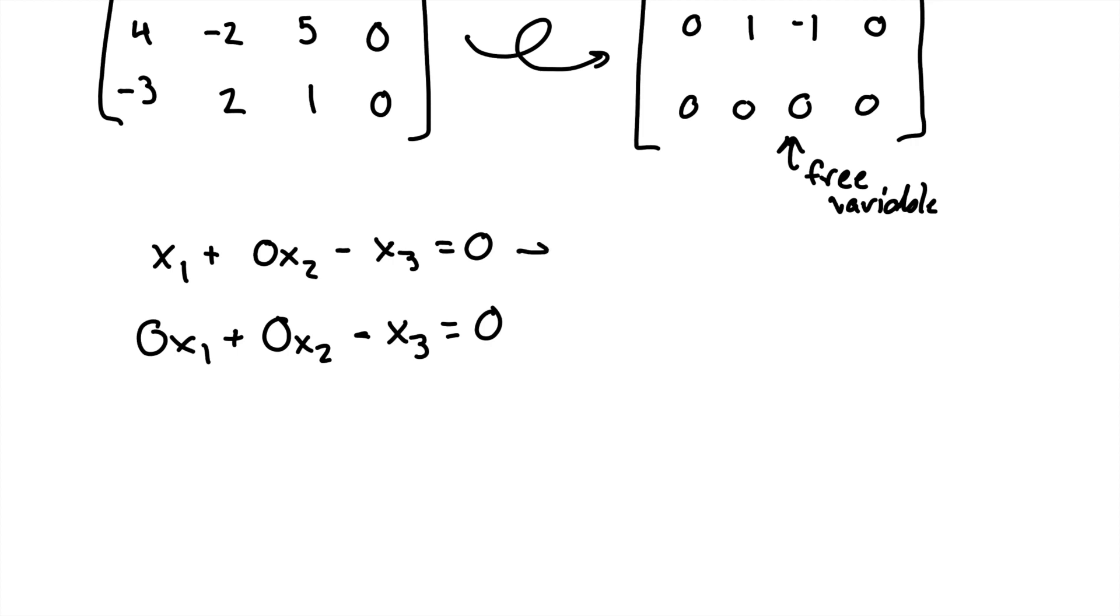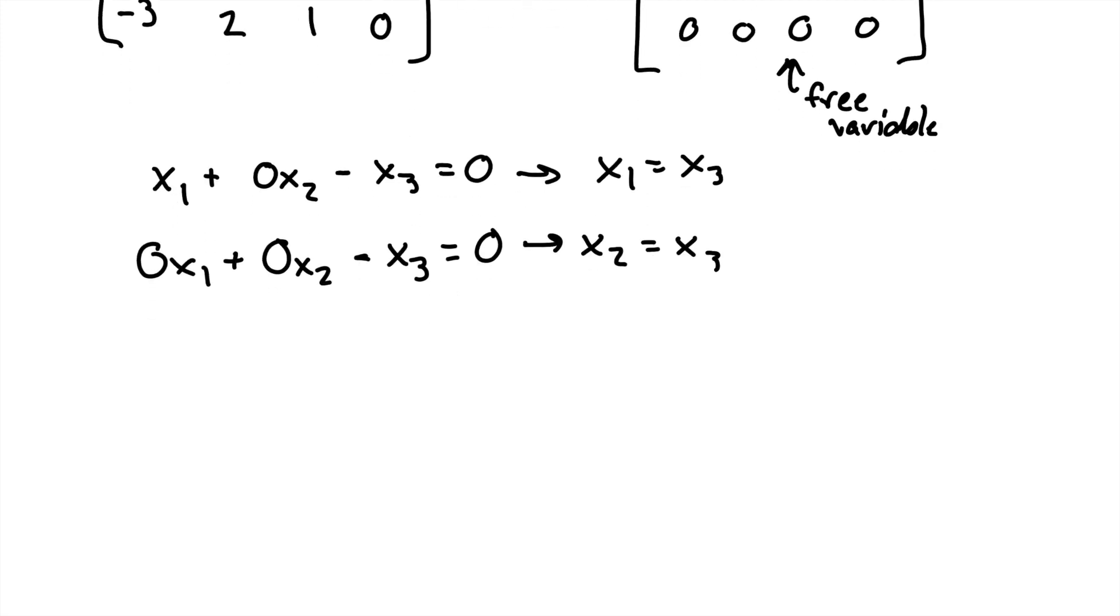And so these are going to turn into X1 equals X3 and X2 equals X3. So now writing our solution in parametric form, we say that X, the X in AX equals 0, is the vector X1, X2, X3.